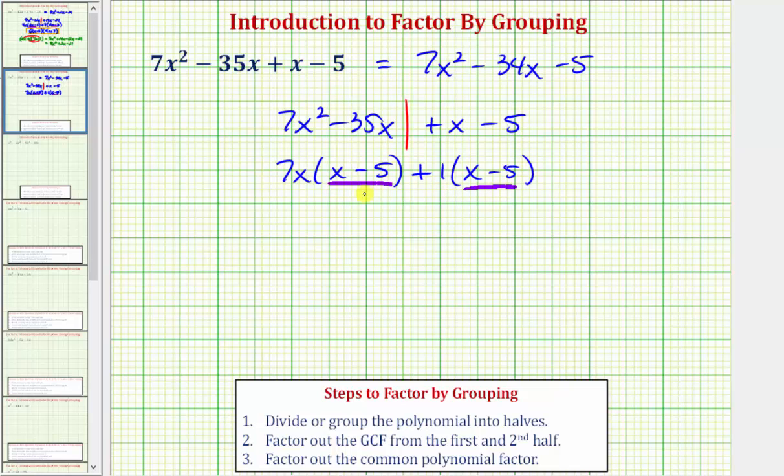So now we want to factor out x minus five from these two products to complete the factoring. So if we factor out the quantity x minus five, notice how we'd be left with 7x plus one, which is the second factor. So this is the factored form of the given quadratic expression.